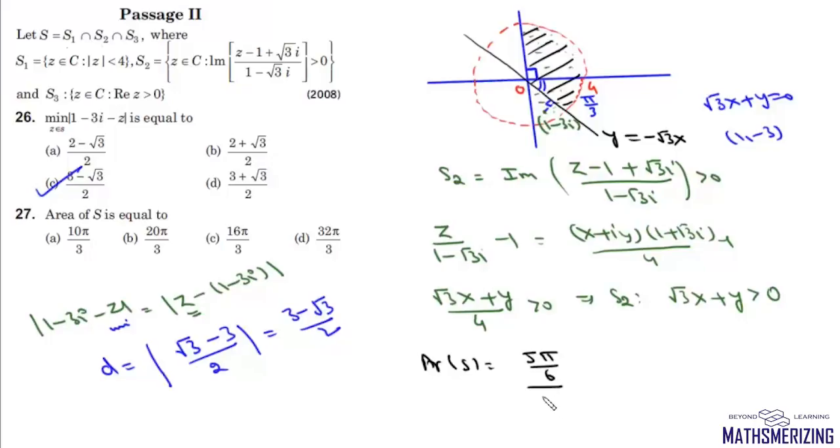Now θ/(2π) times πr², and r² in this case is simply 16. Now here π and π will cancel. This is 8, this is 8, this is 4, and this is 3. So it will be 20π/3, and that's your option B.